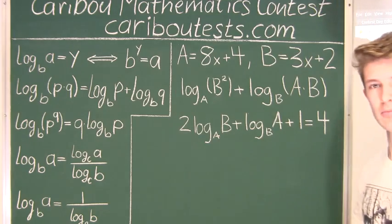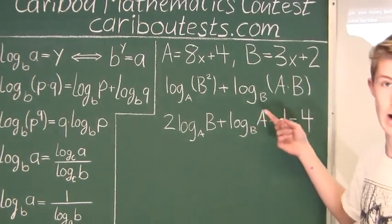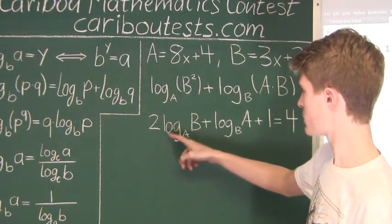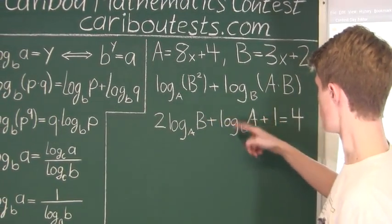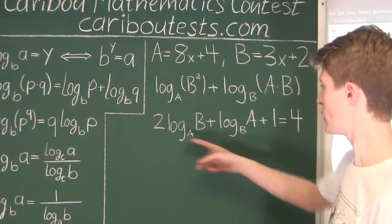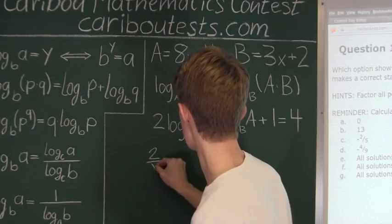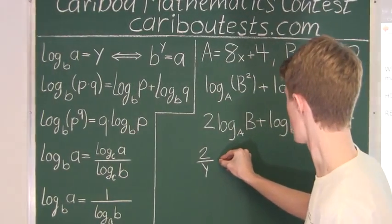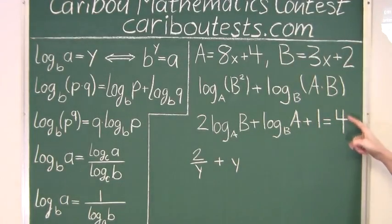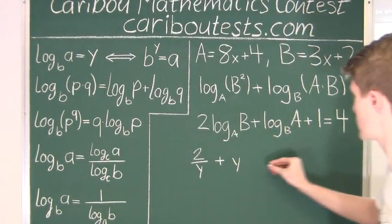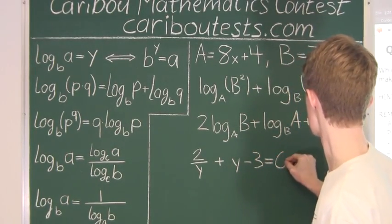To simplify, let Y = log A base B. Then log B base A equals 1/Y, and 2 times that is 2/Y. So we have 2/Y + Y + 1 = 4, which rearranges to 2/Y + Y − 3 = 0.